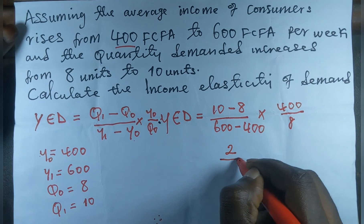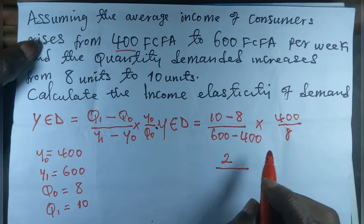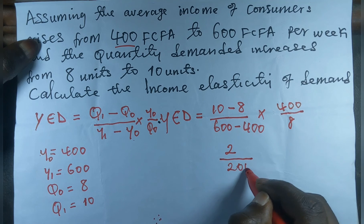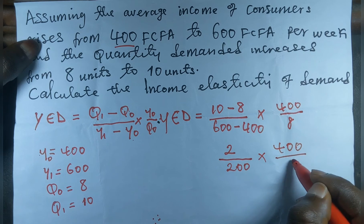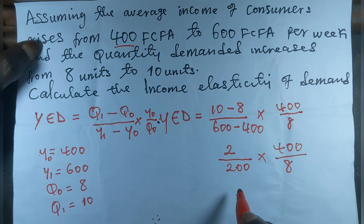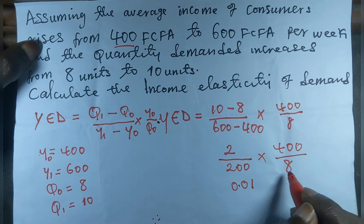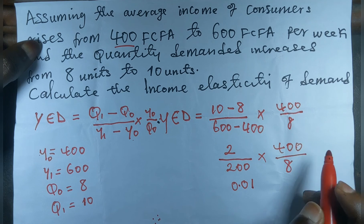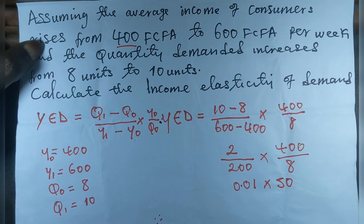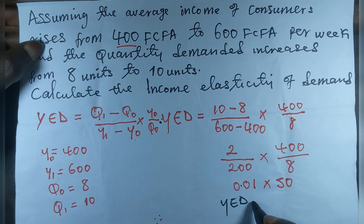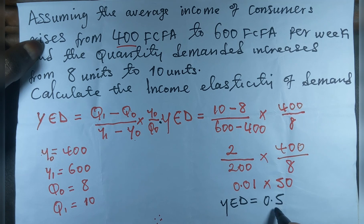10 minus 8 gives us 2. All that divided by 600 minus 400, which gives 200, multiplied by 400 divided by 8. When we divide 2 by 200 we get 0.01, and when we divide 400 by 8 we get 50. So we multiply 0.01 by 50, and YED equals 0.05.